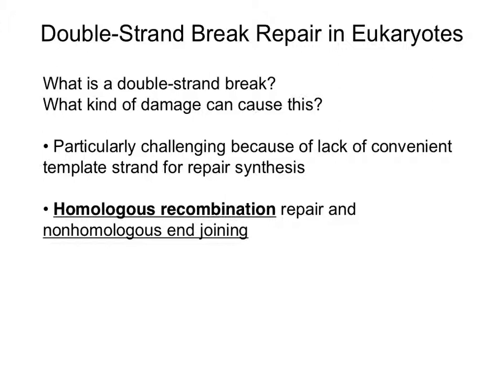The worst kind of DNA damage is a double-stranded break, caused by ionizing radiation or extreme oxidative stress. These are particularly challenging because there is no convenient template strand for repair synthesis. In eukaryotes there are two primary systems: homologous recombination repair and non-homologous end-joining repair. Both can repair double-stranded breaks, but the DNA is often quite different after repair than before, which can be serious.